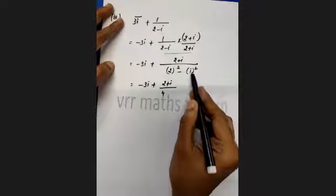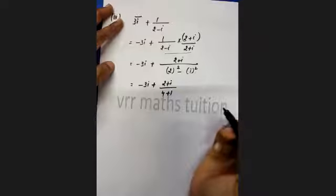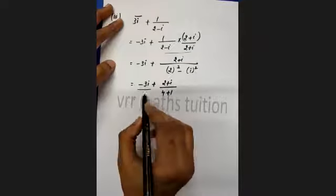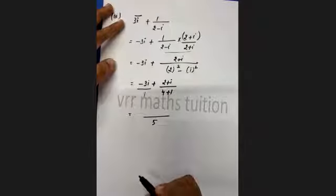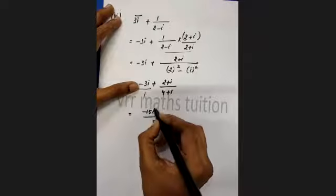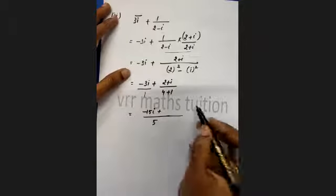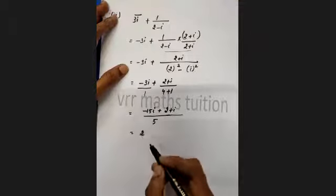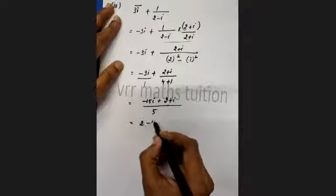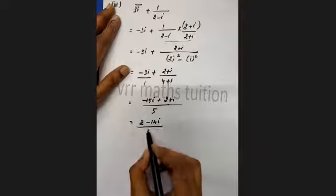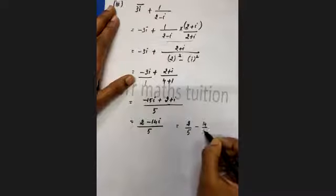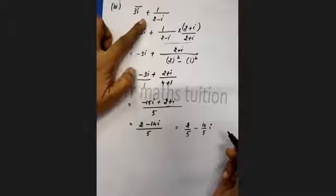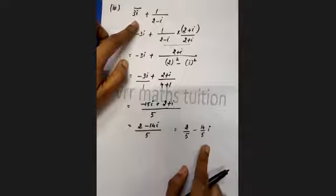So 2 plus i equals minus 3i plus (2 plus i). The denominator: 2 squared is 4, i squared is minus 1, so 4 plus 1 equals 5. Taking LCM as 5: first term multiplied by 5 gives minus 15i. The second term as it is: 2 plus i. So real part: 2, imaginary part: minus 15i plus i equals minus 14i. Result: 2 plus (minus 14i), all divided by 5. So the rectangular format is 2/5 minus 14i/5.